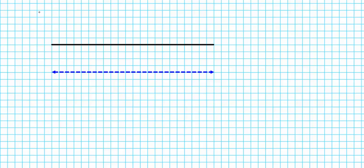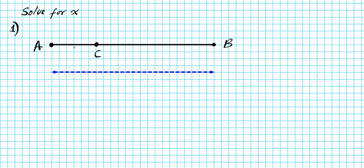The instructions for the problems we're going to be doing is to solve for the variable x. So for number one, let's say we have segment AB with a point somewhere in the middle, point C. This portion is 2x plus 13, and this is x plus 12, and the entire segment is 10 units long.